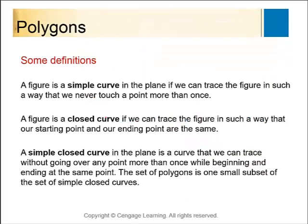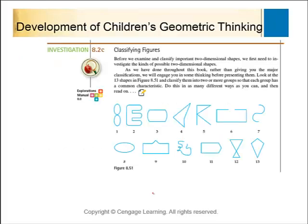A closed curve is one where we can trace a figure such that our starting point and ending point are the same. Looking at our examples: number 2 would be closed, number 3 would be closed, 4 is closed, 5 is not closed, 6 and 7 are not closed, and 8 is closed. Even if you cross over yourself, the definition of closed doesn't say you can't.